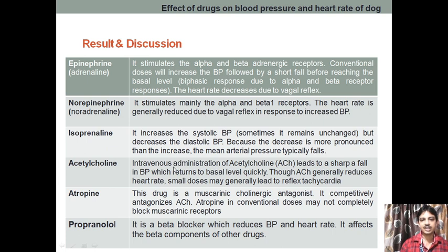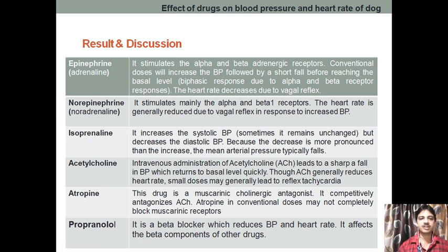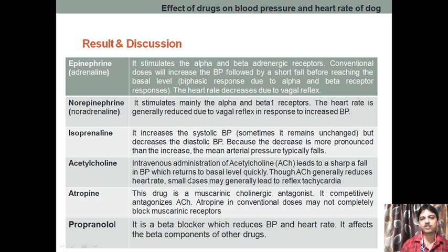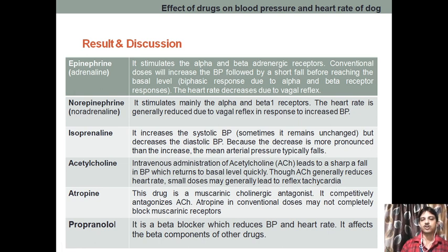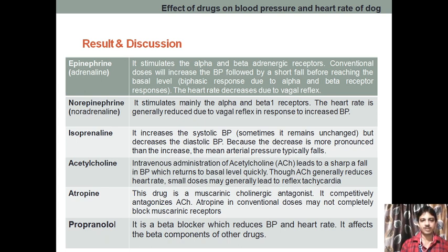Next is acetylcholine. Whenever we give acetylcholine intravenously, it leads to a sharp fall in BP. Why? Because it acts on the M2 receptor, and M2 is responsible for hyperpolarization when acetylcholine binds. So there is a sharp fall in blood pressure, but it returns to the basal level quickly due to the reflex system. It generally reduces heart rate. A small dose may generally lead to reflex tachycardia — meaning at a small dose it will reduce heart rate, but reflex action activates and there is a sudden increase. Generally, giving this drug reduces blood pressure and heart rate.